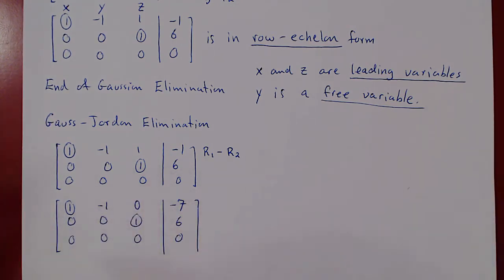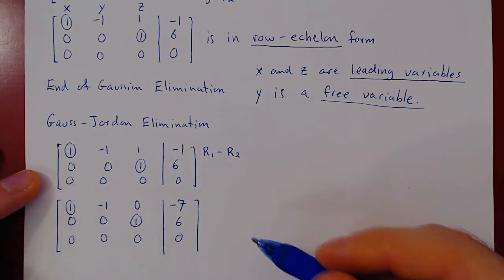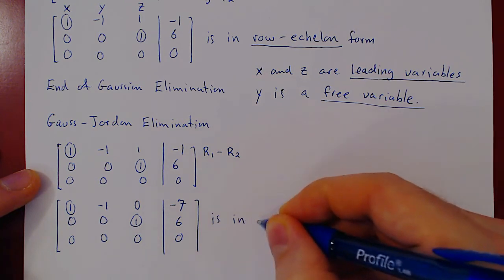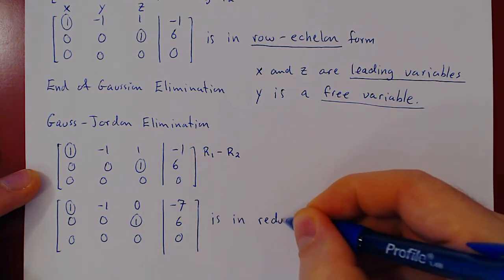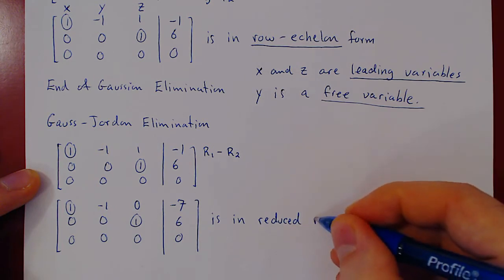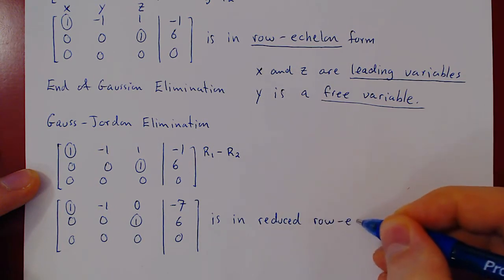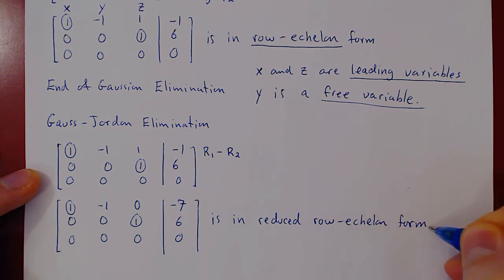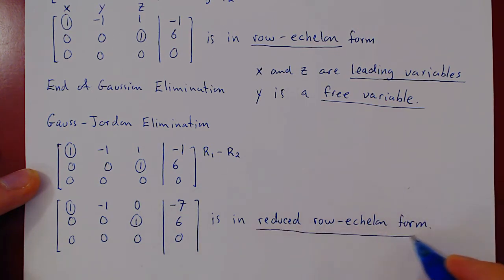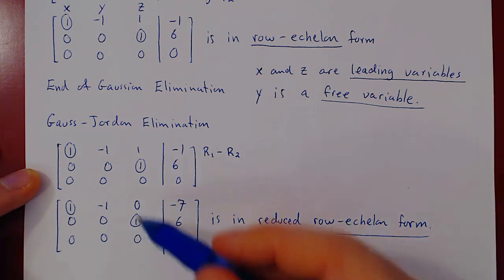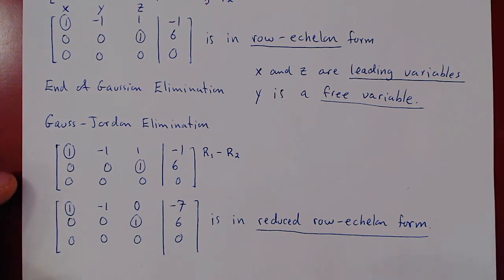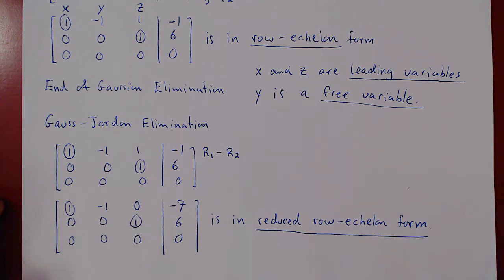We give this matrix a special name: it is in so-called reduced row echelon form. That is the result of introducing zeros above every leading one as well — working backwards from the last leading one up to the very first.